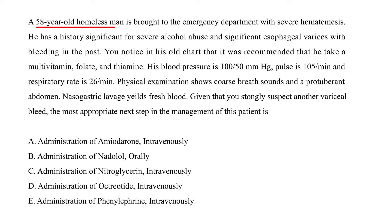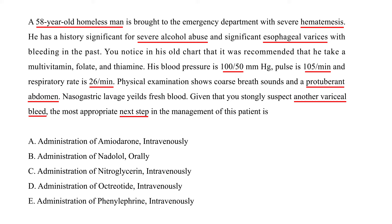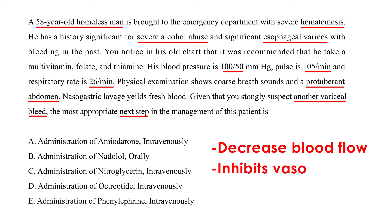Next vignette: A 58-year-old homeless man is brought to the ED with severe hematemesis. He has a history of severe alcohol abuse and significant esophageal varices with prior bleeding. BP is 100, pulse is 105, respiratory rate is 26. Exam shows coarse breath sounds and a protuberant abdomen; nasogastric lavage yields fresh blood. Given strong suspicion of another variceal bleed, the most appropriate next step is IV octreotide, which decreases blood flow and inhibits vasodilation.